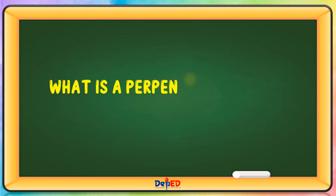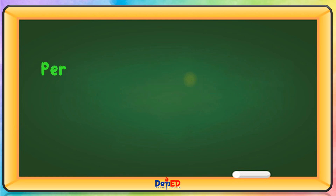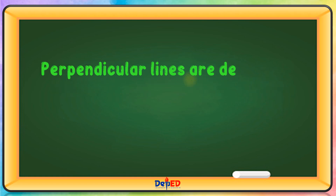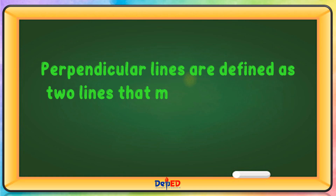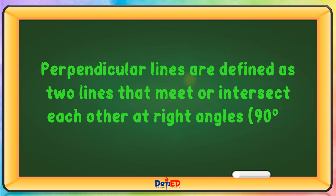What is a perpendicular line? Perpendicular lines are defined as two lines that meet or intersect each other at right angles or 90-degree angles.